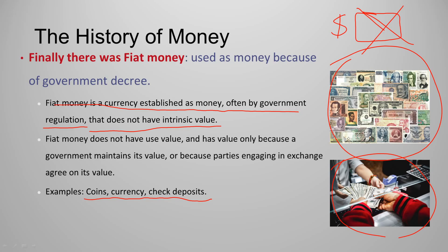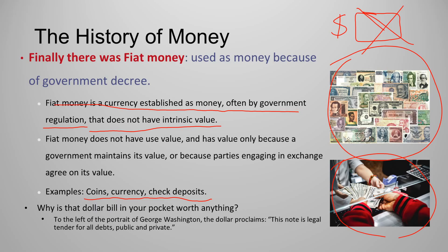To make it simple: why is a dollar bill in your pocket worth anything? To the left of the portrait of George Washington, the dollar bill proclaims: 'This note is legal tender for all debts, public and private.' It is a legal tender backed by the government, and if someone does not accept it, the government can take action. So fiat money gets its value because the government backs it. That completes the history of money: first barter, then commodity money, and finally fiat money.